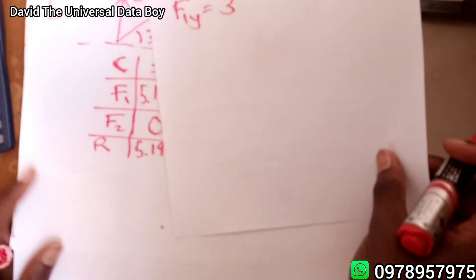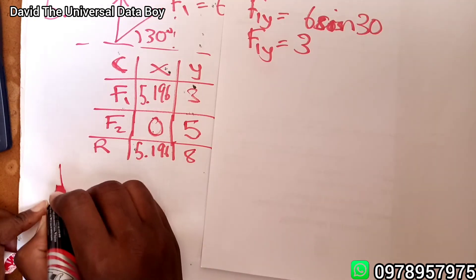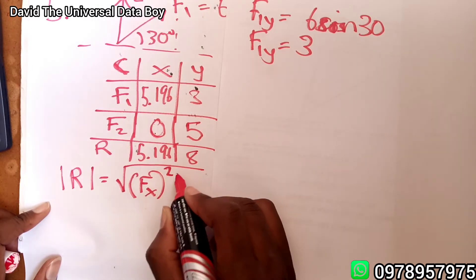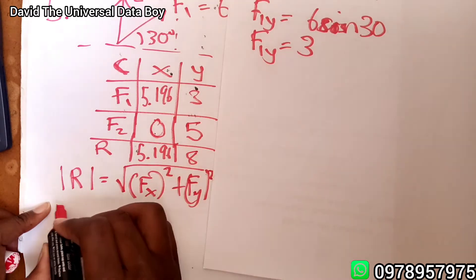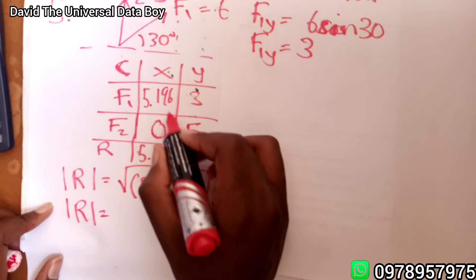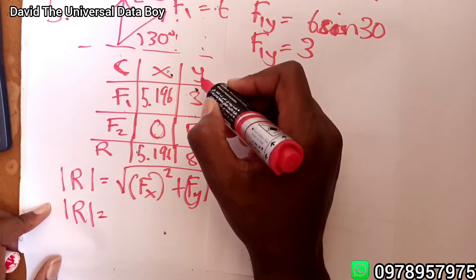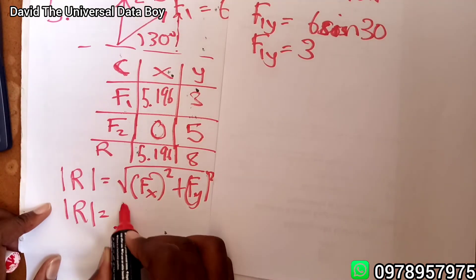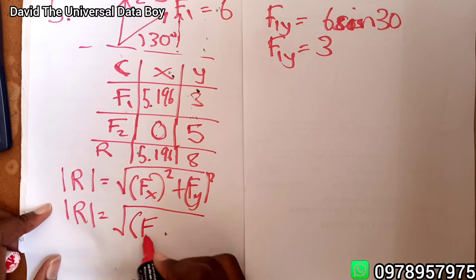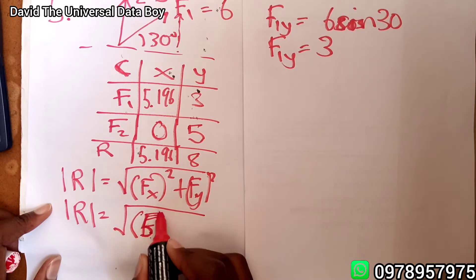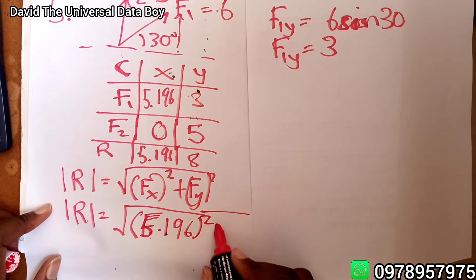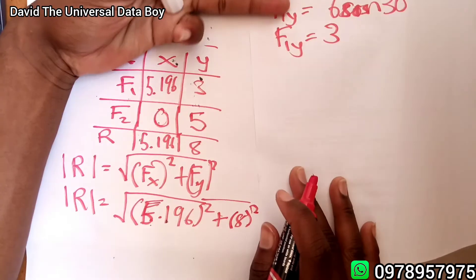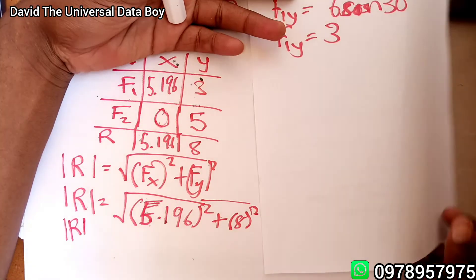We've found Rx = 5.196 and Ry = 8. To find the magnitude, the magnitude of R equals the square root of (force in x squared plus force in y squared). So R equals the square root of 5.196 squared plus 8 squared — that's the sum of forces in the x and y axes for our resultant.